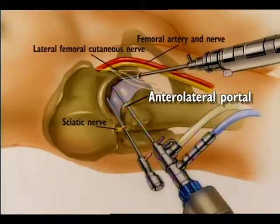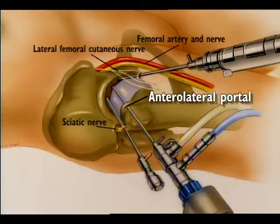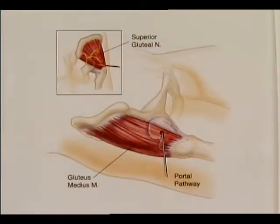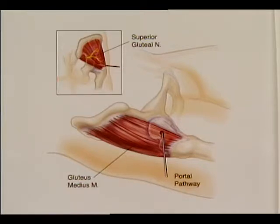The anterior lateral portal lies most centrally in the safe zone for arthroscopy. It penetrates the gluteus medius before entering the lateral aspect of the capsule at its anterior margin. The superior gluteal nerve on the deep surface of the gluteus medius courses transversely above the lateral two portals approximately 4.4 cm.